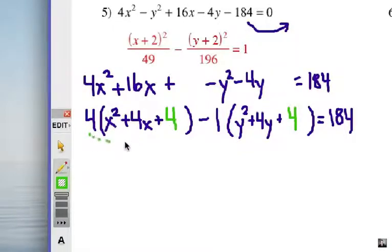Now what did I actually add into the left side of that equation? Well, I added 16, right, 4 times 4, and I added negative 4. All right, so if I add a 16 and a negative 4, that's really adding 12. I need to do that on the other side. Okay, got to keep it balanced.